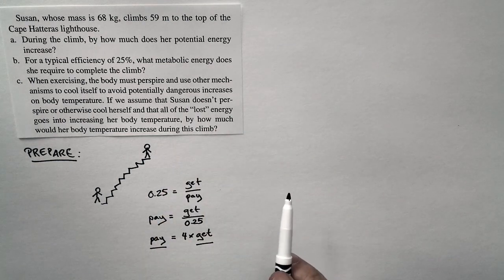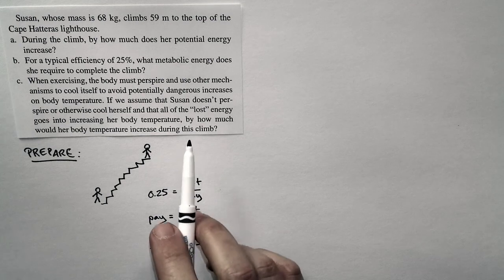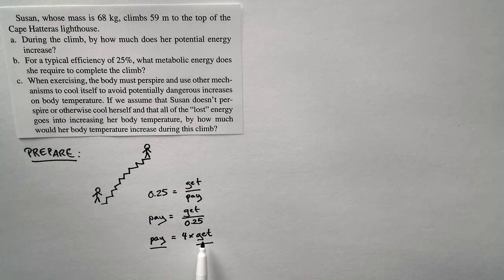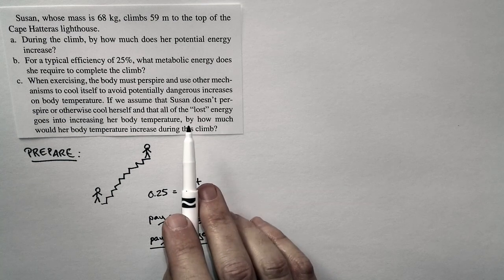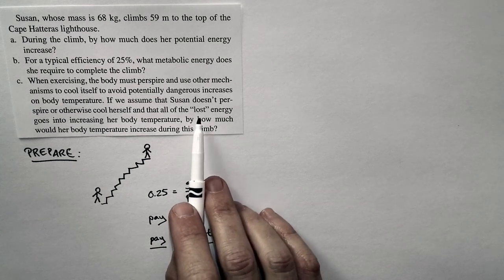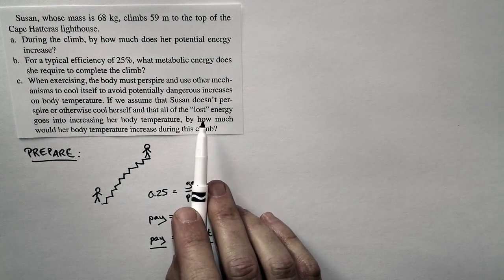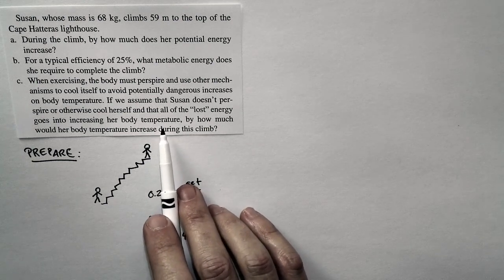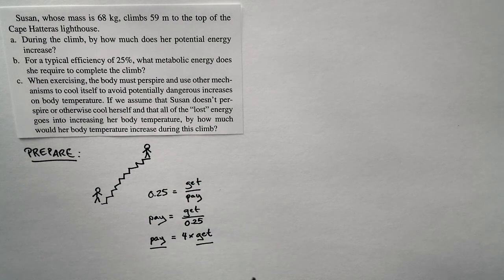She's going to pay four times as much as she gets, so there's some leftover energy. That leftover energy is going to go into warming up her body. If we assume she doesn't exhaust it to the environment, we're going to compute how much this would increase her body temperature.